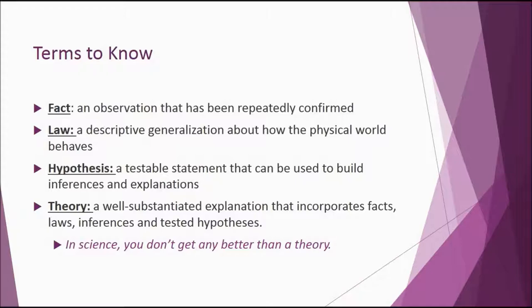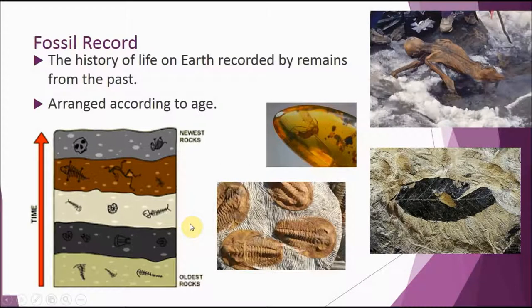So in this video we're going to go ahead and talk about some of those pieces of evidence. One of the largest pieces of evidence that we have is our fossil record. Our fossil record can be leftover remains of animals or even plants. Now you already know coming into the class that as you go down, the organisms that live in that time frame are going to get older. The animals towards the top are a little bit newer. Fossils are everywhere.